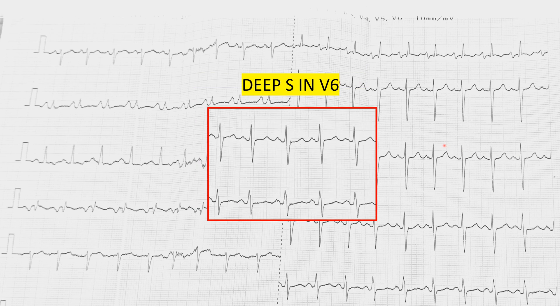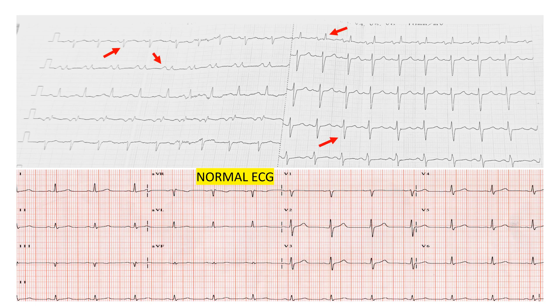Moving further, here is a finding that is not commonly looked for but should be kept in mind whenever right heart pathology is suspected. There should be a deep S wave in lead V5 or V6. In a normal ECG there should not be a deep S wave like this one, but here we can clearly see very large, deep S waves.